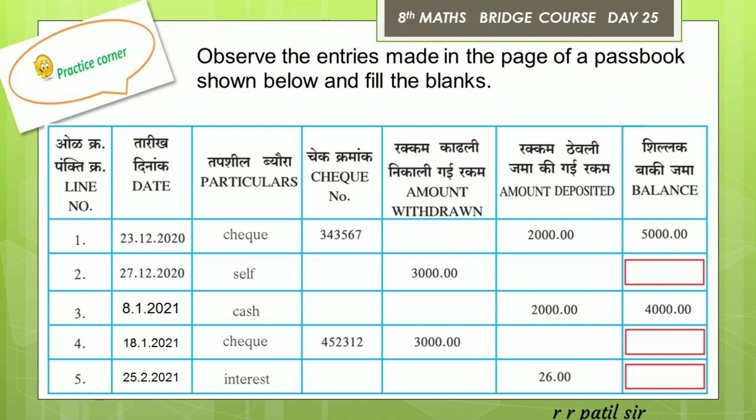Then we have the fifth entry — this is the balance amount from bank interest, due on 25th February. The interest is 26 rupees. The balance is 4,000 minus 3,000, which is 1,000, and then we add 26 rupees, giving a total balance of 1,026 rupees.